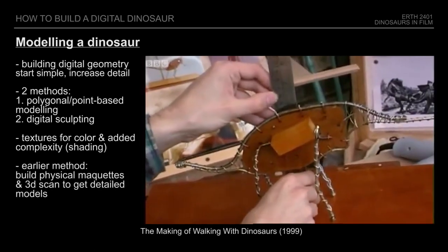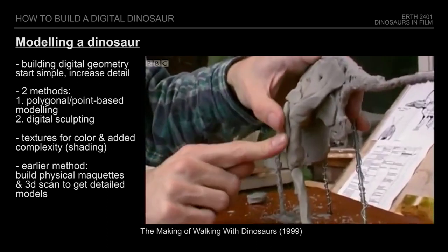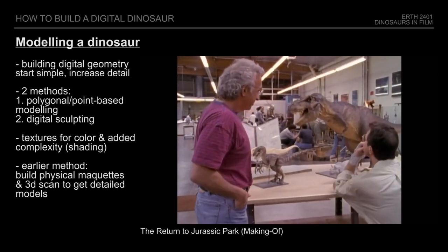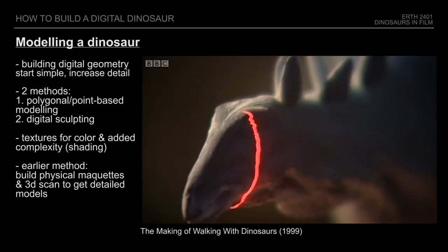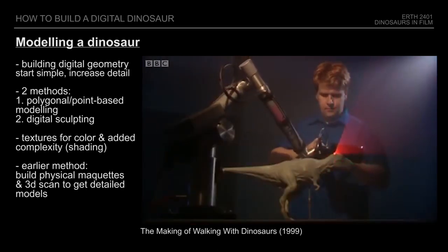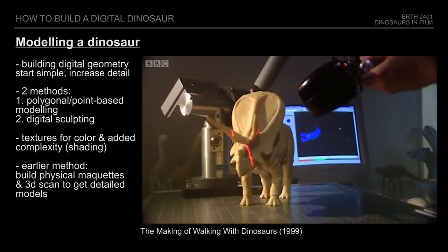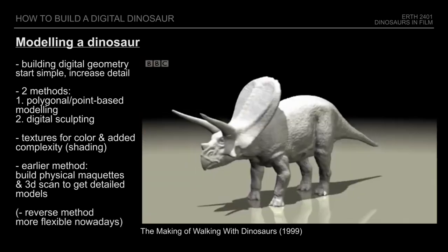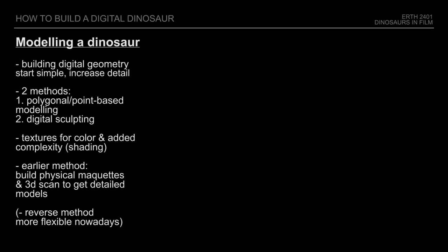A common method was to build real maquettes first, as they would often be used on location as a reference for lighting or for the CG artist later on, and then scan these into the computer with a 3D scanner in order to get a digital model. But with the speed and flexibility of digital tools, it can actually be easier now to create the model in the computer first, and then print it out later if needed.